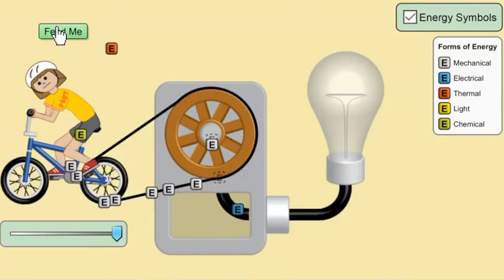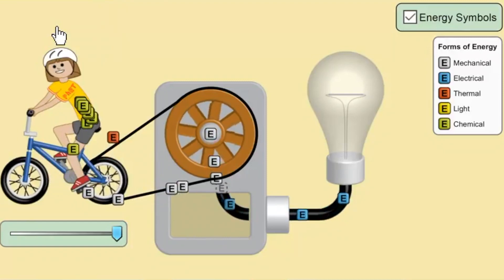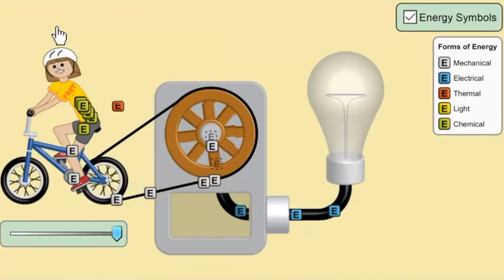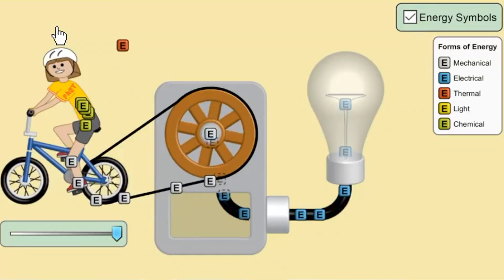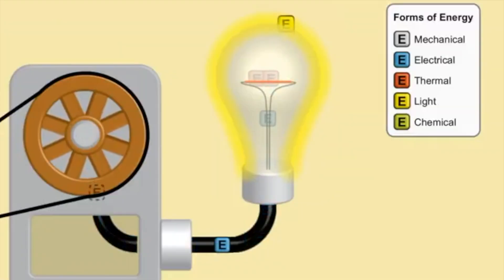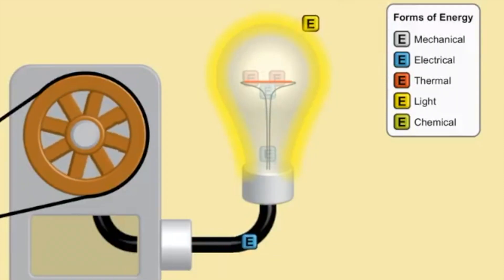Now, as the wheel from the pulley continues to turn, that mechanical energy is being used to generate electricity. So we see blue E's moving through the wire again. This is electrical energy. Finally, we go again to the light bulb, and we see at the light bulb that the electrical energy is being converted into both thermal and light energy.